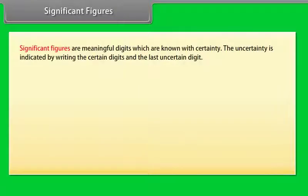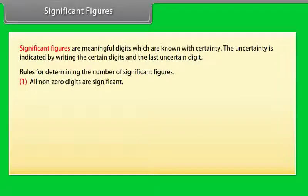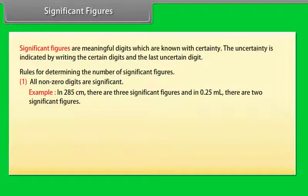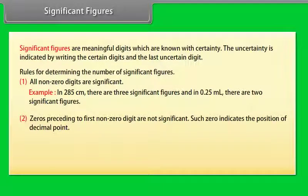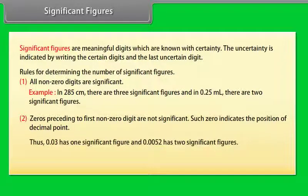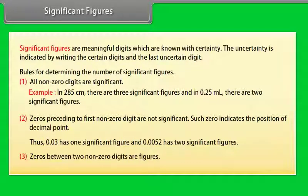Significant figures are meaningful digits which are known with certainty. The uncertainty is indicated by writing the certain digits and the last uncertain digit. Rules for Determining the Number of Significant Figures: All non-zero digits are significant. In 285 cm, there are three significant figures and in 0.25 ml, there are two significant figures. Zeros proceeding to first non-zero digit are not significant. Such zeros indicate the position of decimal point. Thus, 0.03 has one significant figure and 0.0052 has two significant figures. Zeros between two non-zero digits are significant.